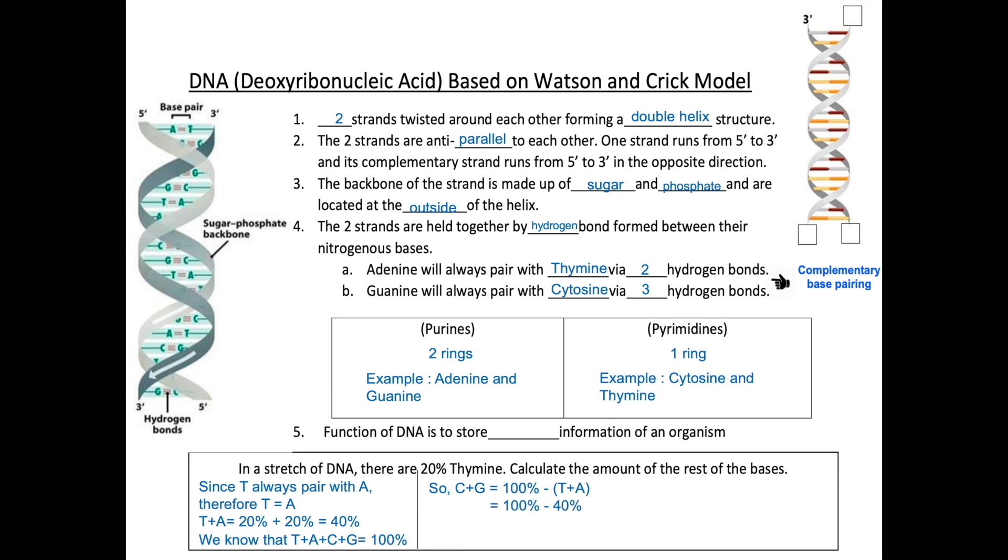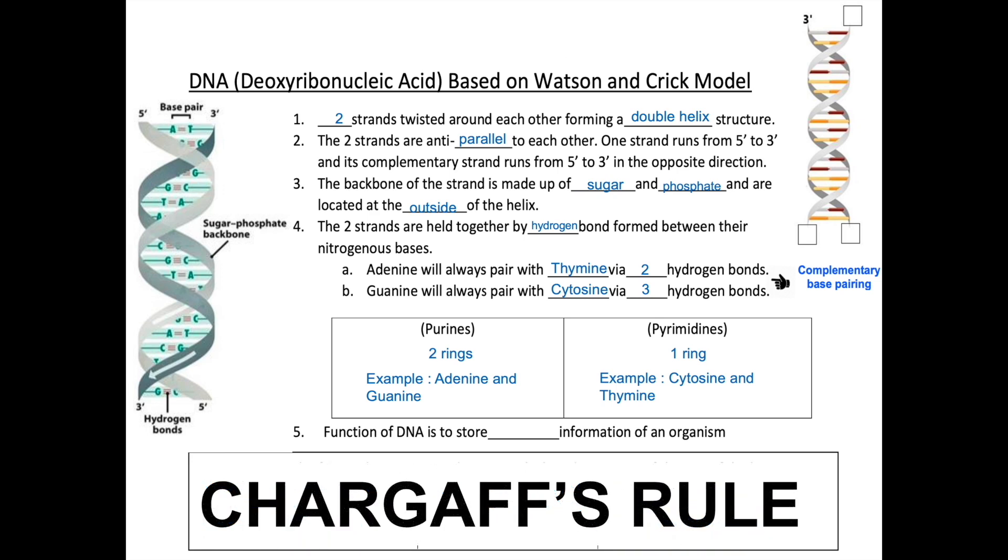Since C always pairs with G, therefore, the amount of C is equal to the amount of G. Hence, you can get the individual amount of C and G by dividing 60% by 2, so you get 30%. The equal number between A and T and C and G is known as Chargaff's rule.